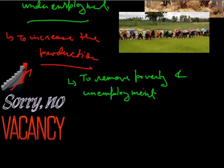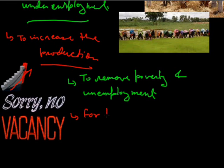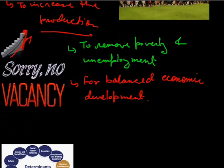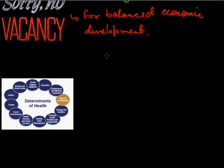The Indian government has started many new programs. NREGA is one of the best programs, through which each person gets a guarantee of employment for a minimum of 100 days. Another reason why we need to change the present occupational structure is for balanced economic development. A change of occupational structure is required so that each and every one gets equal benefit of this balanced economic development.